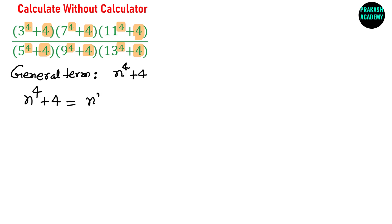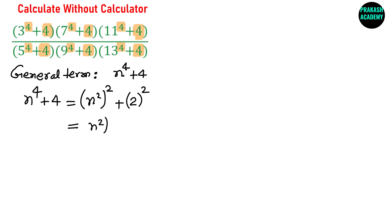We can write n⁴ + 4 as (n²)² + (2)². This looks similar to an a² + b² form, but we are missing the 2ab term. So we add and subtract the 2ab term: (n²)² + (2)² + 2·n²·2 − 2·n²·2.